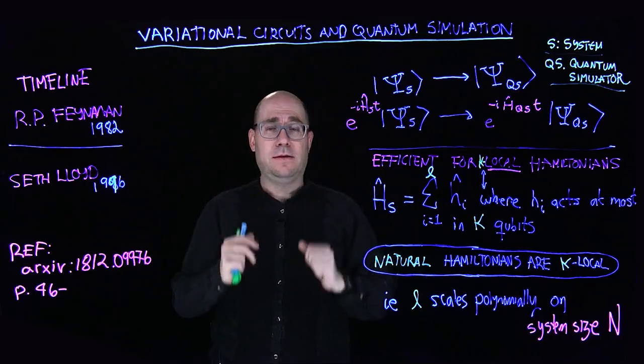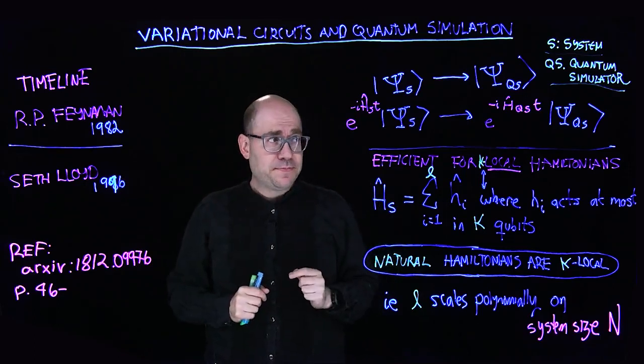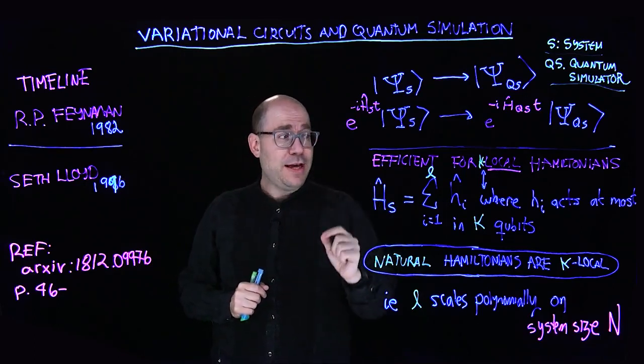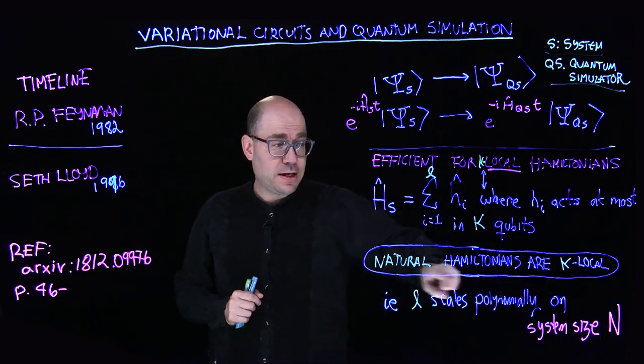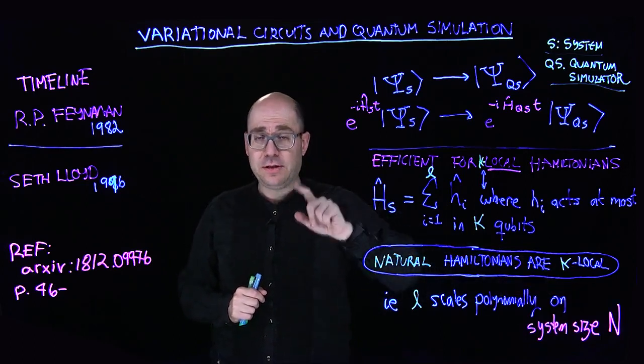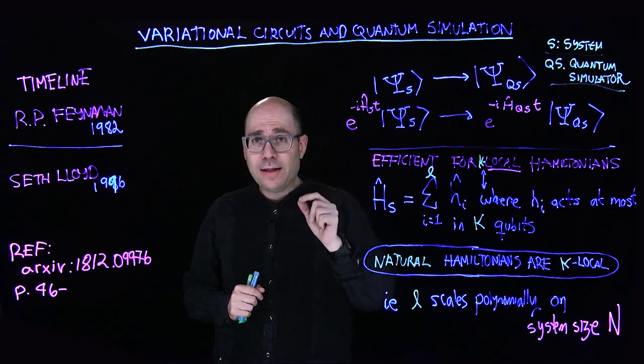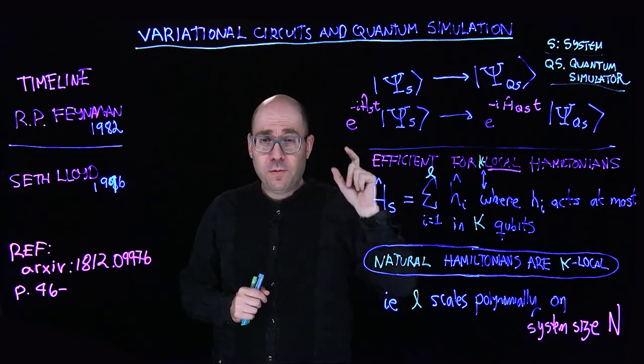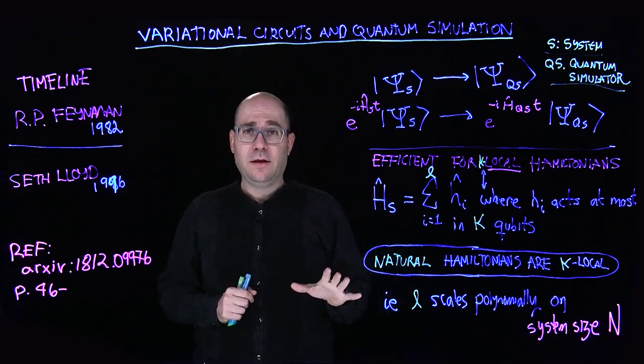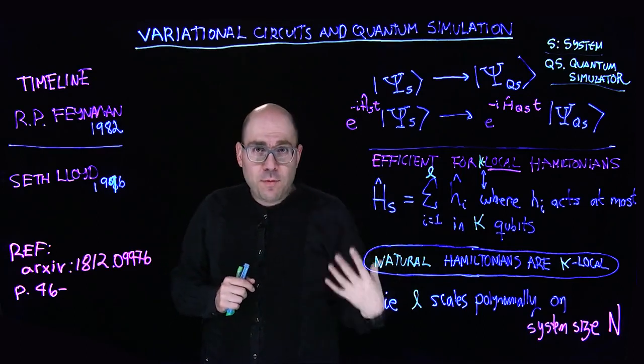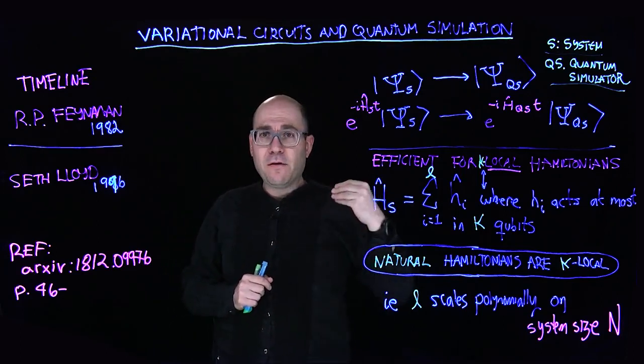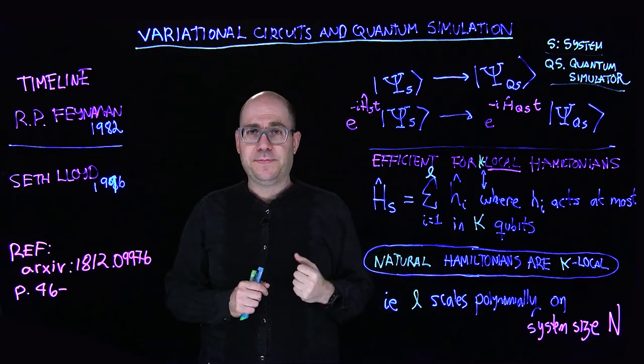So what Seth did is formalize and completely make the basis for Feynman's idea. In other words, he grounded it and he proved that quantum simulation for what I like to call natural Hamiltonians is efficient. In other words, a quantum simulator or a full-blown quantum computer can do it. So now when I go into the mode of a full-blown quantum computer, I'm thinking of the gate model of quantum computation.